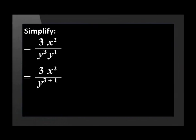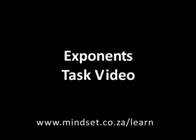Let's simplify further. In the denominator we are multiplying two bases that are the same, so we can add the powers: y cubed times y equals y to the power four. We get three x squared over y to the power four. Thank you for joining us — remember to try the questions in the exponents tasks video. You can also learn more about exponents on our website at www.mindset.co.za/learn.